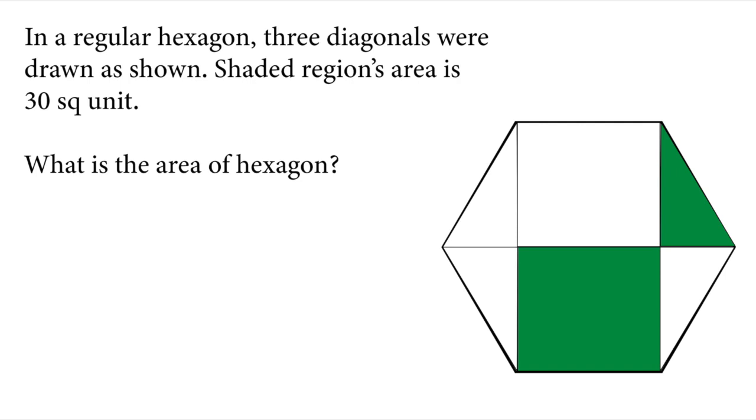In a regular hexagon, three diagonals were drawn as shown. Shaded region's area is 30 square units. What is the area of hexagon?